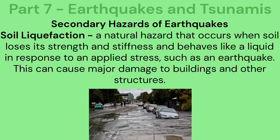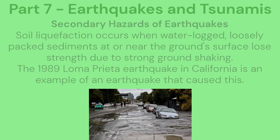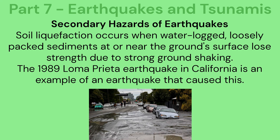Secondary hazards of earthquakes. The first hazard is soil liquefaction: a natural hazard that occurs when soil loses its strength and stiffness and behaves like a liquid in response to an applied stress such as an earthquake. This can cause major damage to buildings and other structures. Soil liquefaction occurs when waterlogged, loosely packed sediments at or near the ground surface lose strength due to strong ground shaking. The 1989 Loma Prieta earthquake in California is an example.